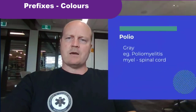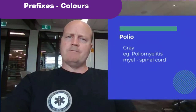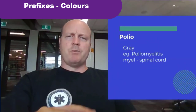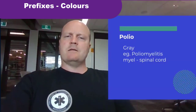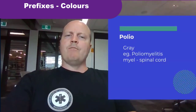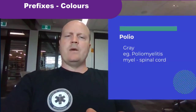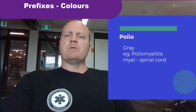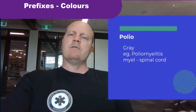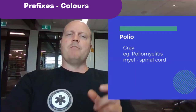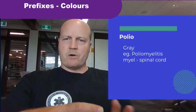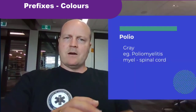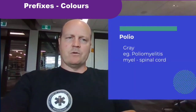Almost there! 'Polio' means gray. So with poliomyelitis — 'polio' is gray, 'myel' means to do with the spinal cord, 'itis' is inflammation — so poliomyelitis is inflammation of the gray matter of our spinal cord.